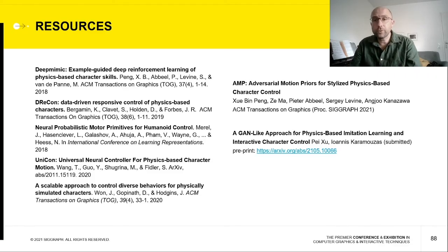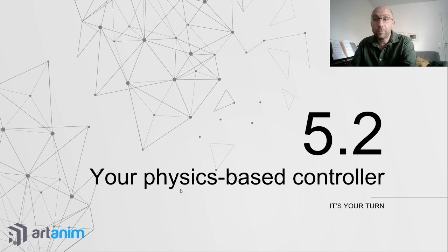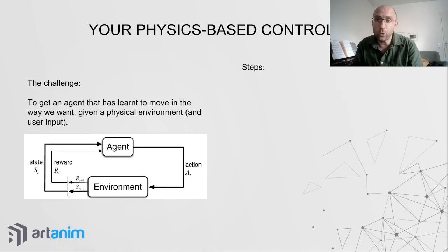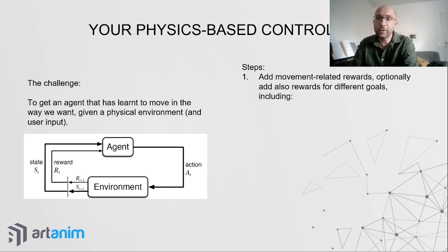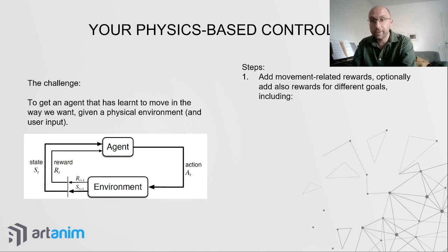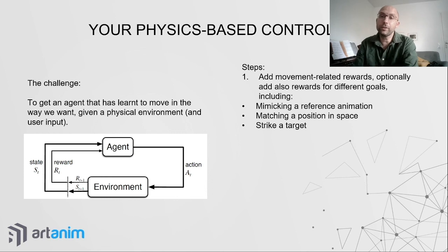If you want to use any of those resources, they're available in the slides. Now it's your turn: if you want to develop your own physics-based controller, the main challenge is getting a deep reinforcement learning agent to learn to move in the physical environment you provide, reacting to user input. The first step is to add movement-related rewards. Optionally, add rewards for other goals — mimicking a reference animation, matching a position, striking a target, throwing a ball.